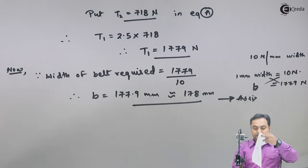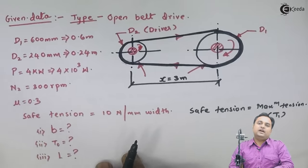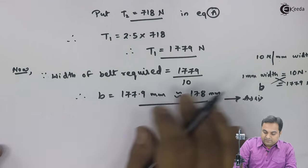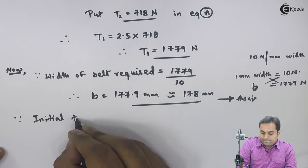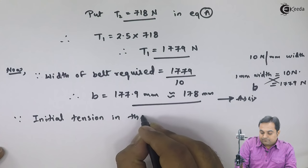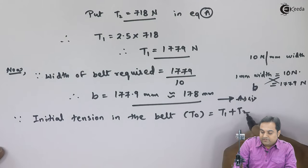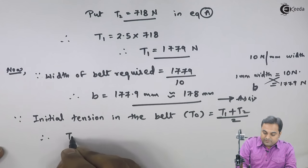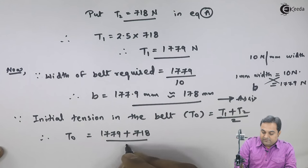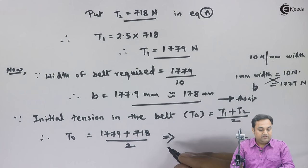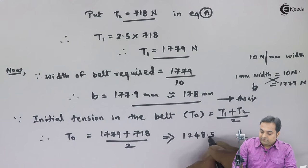The next question requires calculating the initial tension in the belt, T0. We know that T0 is the average of T1 and T2. So initial tension T0 is equal to T1 plus T2 divided by 2, which is 1779 plus 718 divided by 2. T0 comes out to be 1248.5 Newton. This means the belt must initially be under this much tension to be mounted over the pulley.